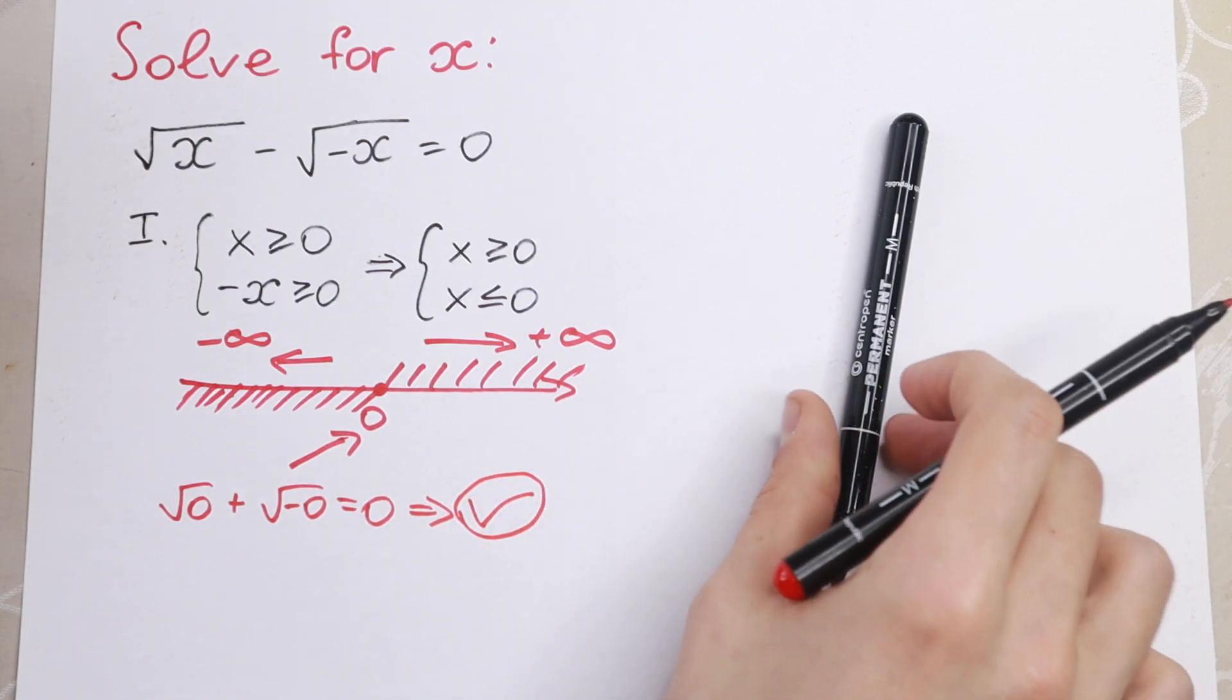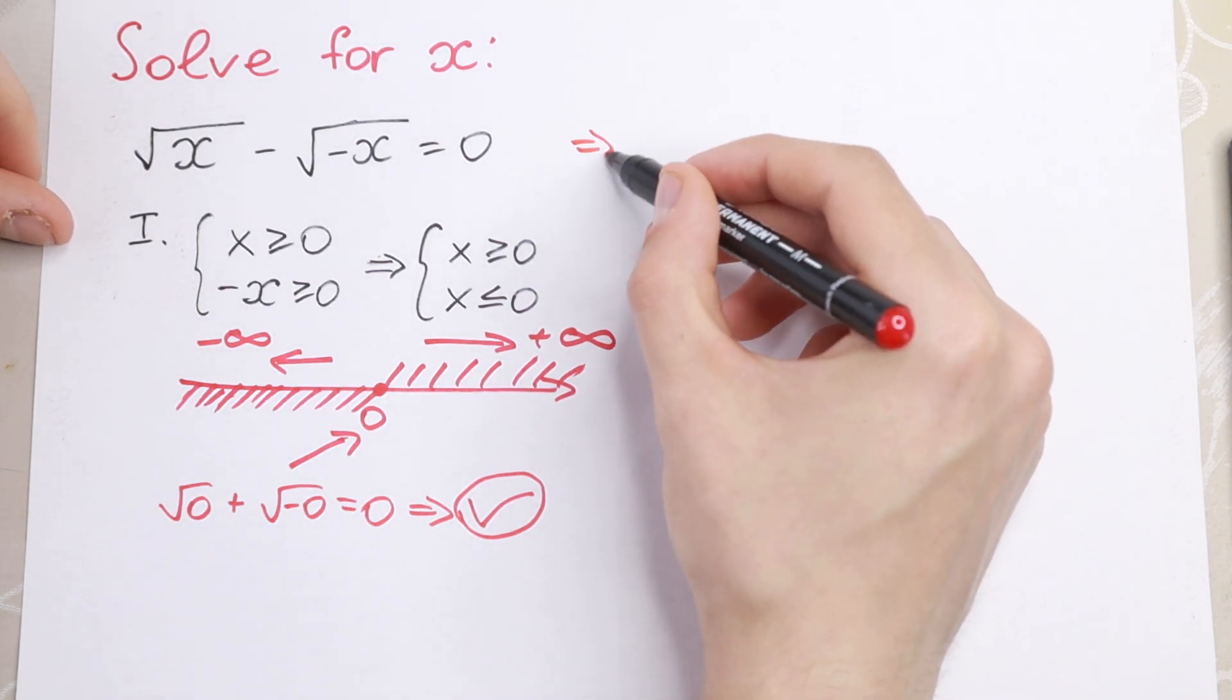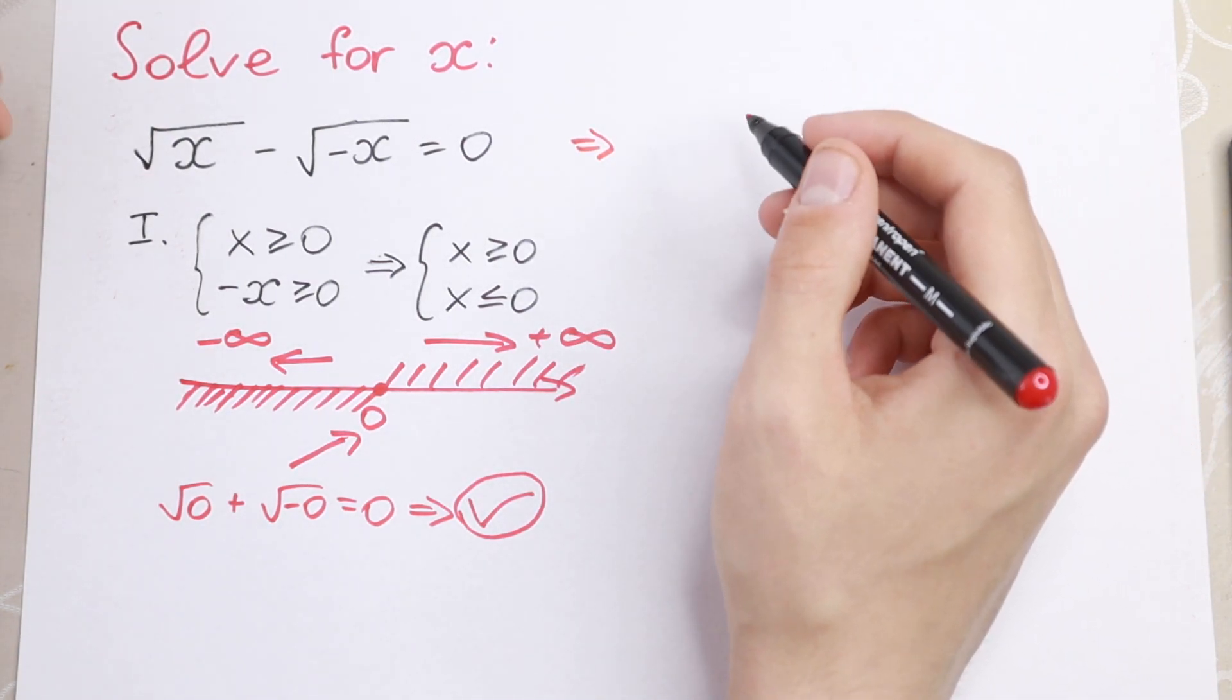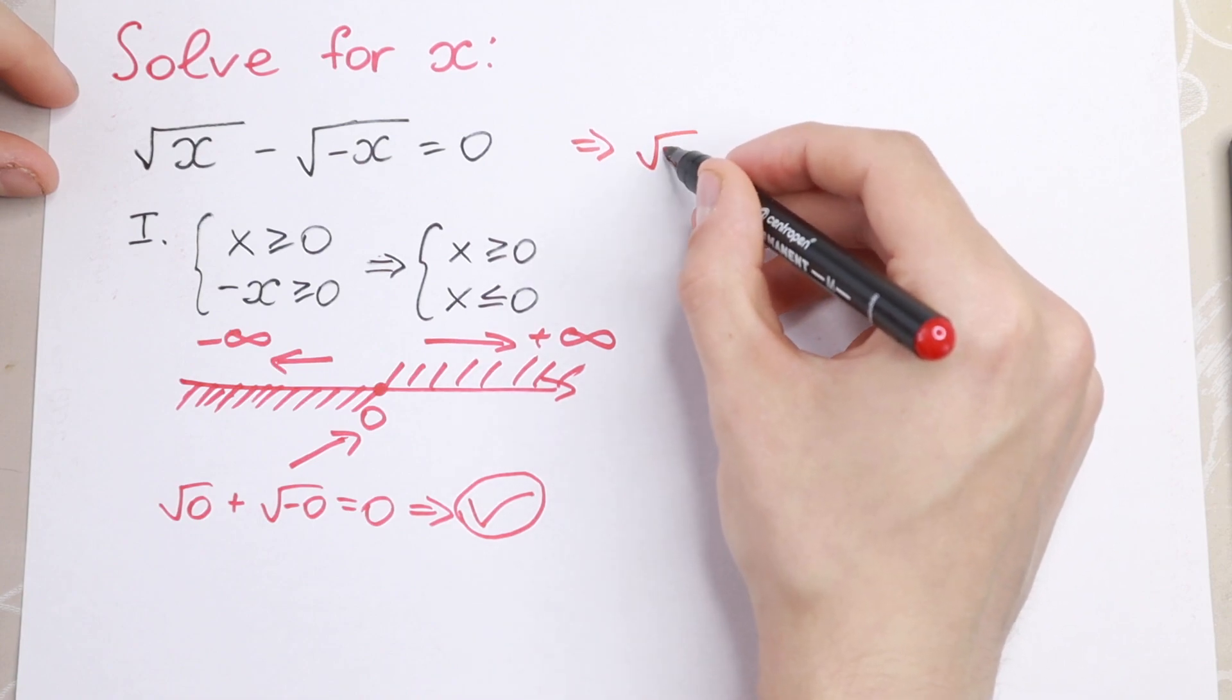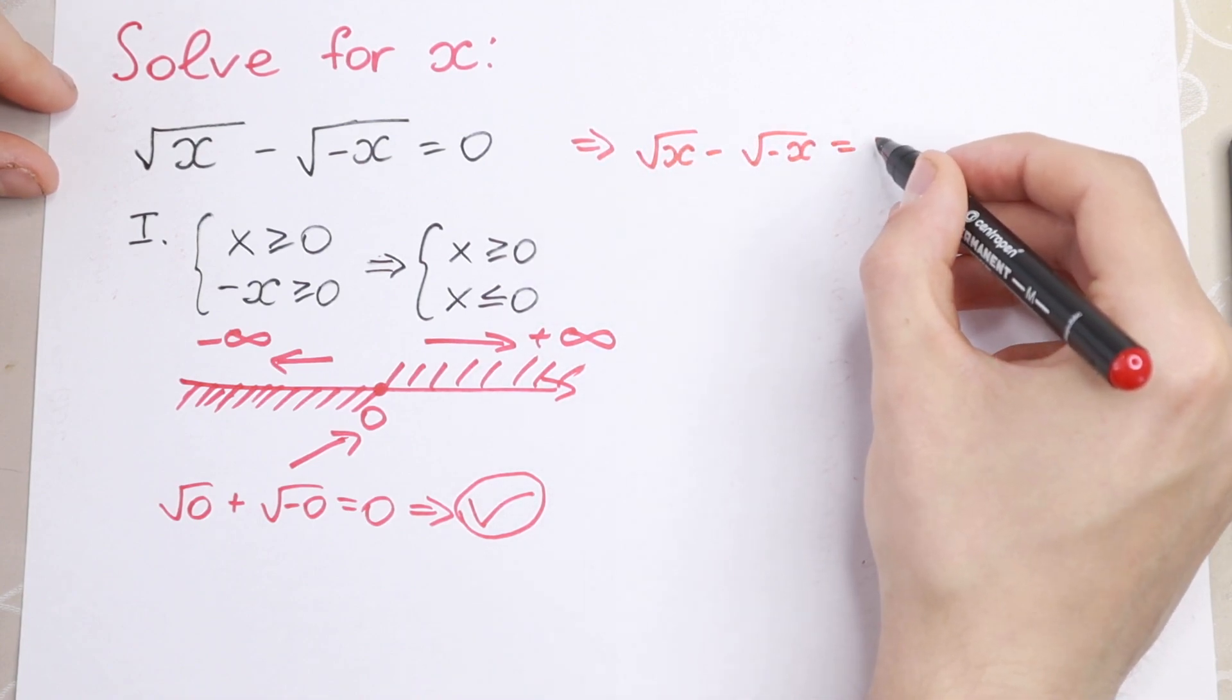So this is my approach using inequalities. But moreover, we can easily solve it using our school program, using our knowledge at school. So square root of x minus square root of minus x equal to 0.